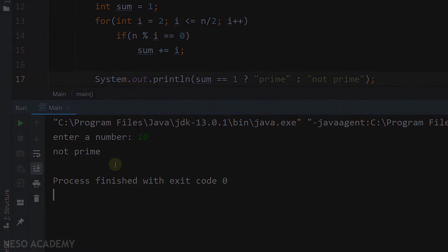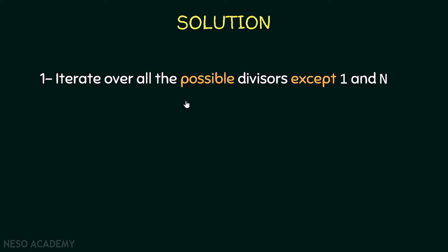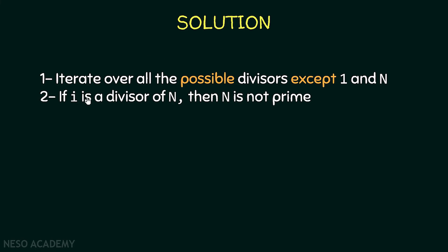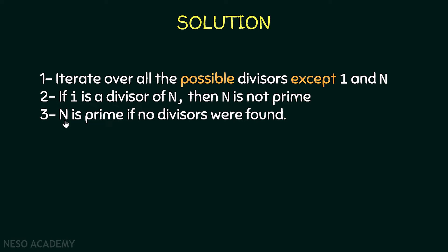Now let's look at the second solution. We are going to iterate over all the possible divisors except 1 and n, and each time test if i is a divisor of n. If i is a divisor of n, then n is not prime. If we find at least one divisor of n other than 1 and n, we can immediately say n is not a prime number. Finally, n is a prime number if no such divisors were found.